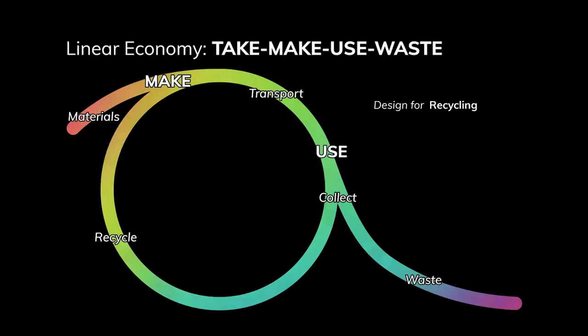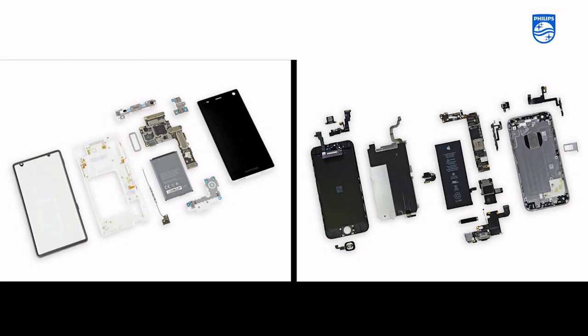Basically, what this slide shows is what we do in a linear economy: taking materials, making a product, using the product, disposing of it — part goes to waste, part is recycled. But what we do recycle is, from a design perspective, coincidental. Usually we didn't apply any design for recycling, and we may have mixed recyclable materials in ways that still prevent recovery at end of life. Recycling happens, but can be much improved when we take design for recycling into account.